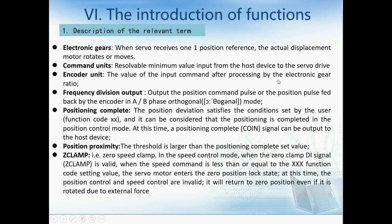The frequency division output outputs the divided command pulse or the divided pulse fed back by the encoder, in AB phase or software mode. This is the function of PAO, PBO, and PCO. Position complete means when the position deviation satisfies the condition set by the user, and it can be considered that positioning is completed in position control mode. At this time, a position complete signal is output to the host device.